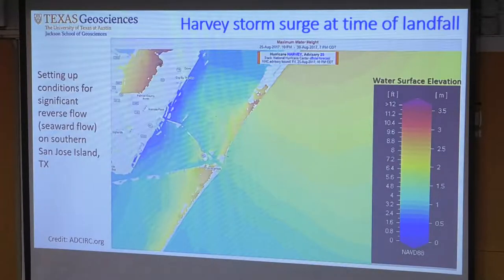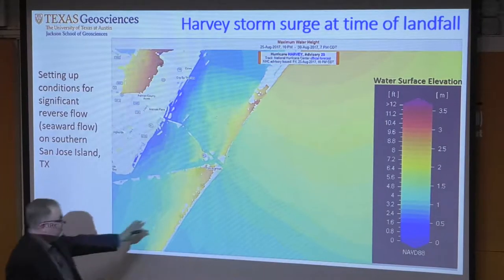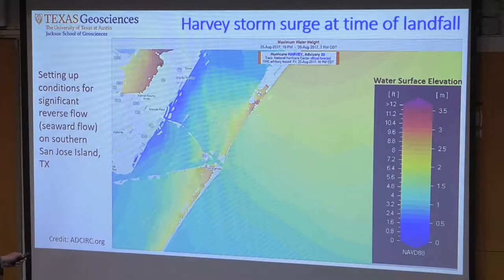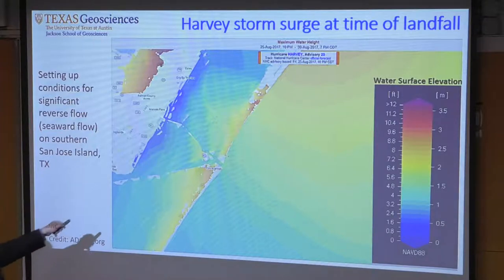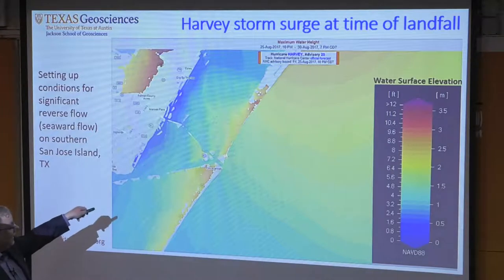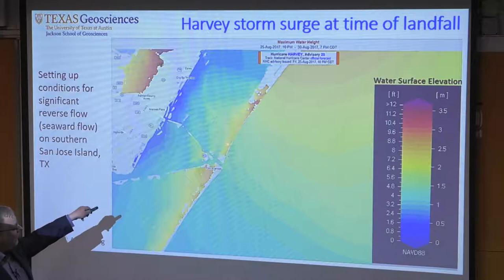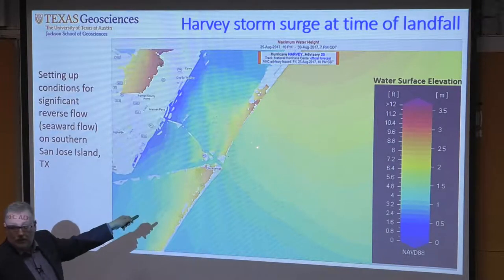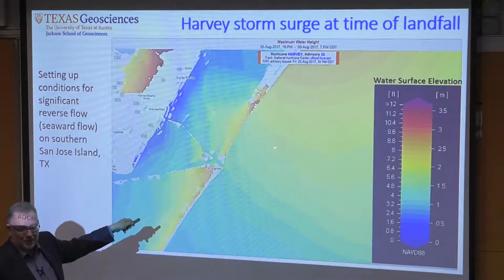Hurricane Harvey also did something really fascinating: reverse flow. This is from ADCIRC — the big coastal surge and hazard assessment model from University of North Carolina, Notre Dame, and University of Texas. This shows water surface at the time of the storm making landfall. The hot colors are high water surface elevations; the cool colors are low. On San Jose Island, you can see water levels were actually higher on the backside of the barrier island than on the seaward side. This drove tremendous overland flow in the opposite direction. Reverse flow currents like that move a lot of sediment well offshore — definitely lost from our system.